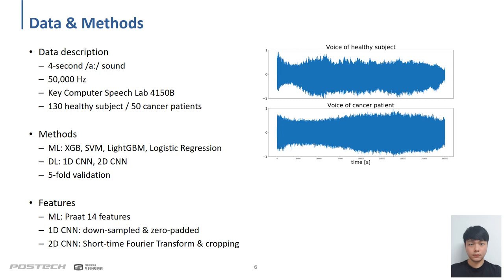We use 5-fold validation methods to compensate for the small dataset. Machine learning methods require predefined features, so Praat features are introduced, which is a common speech analysis software in phonetics. 14 features are extracted in total. Considering input shape requirements or computational cost, we utilize downsampling and zero padding for 1D CNN, and short-time Fourier transform and cropping for 2D CNN.